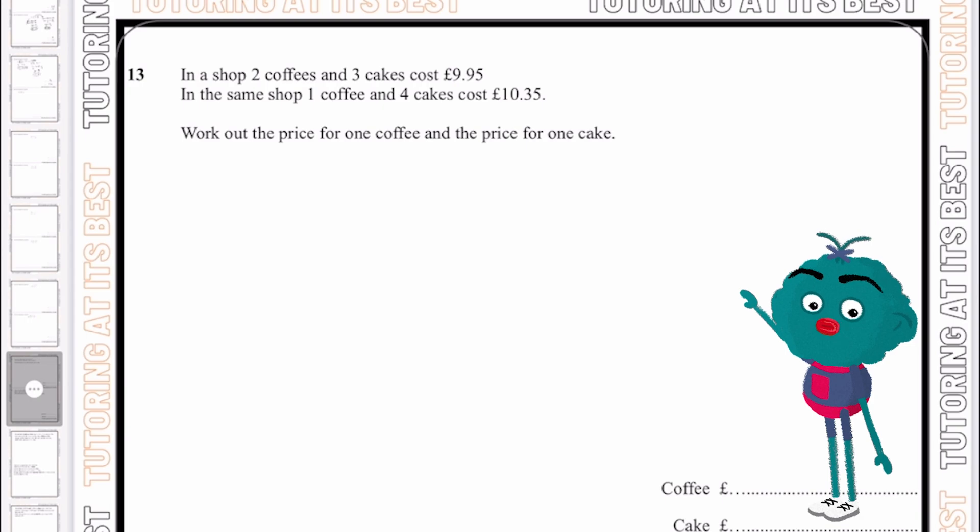Remember now, simultaneous equations can be created to solve problems. So let's go through the first example. In a shop, two coffees and three cakes cost £9.95. I'm going to label my coffees as x and my cakes as y. I'm then going to go ahead and write out two equations.